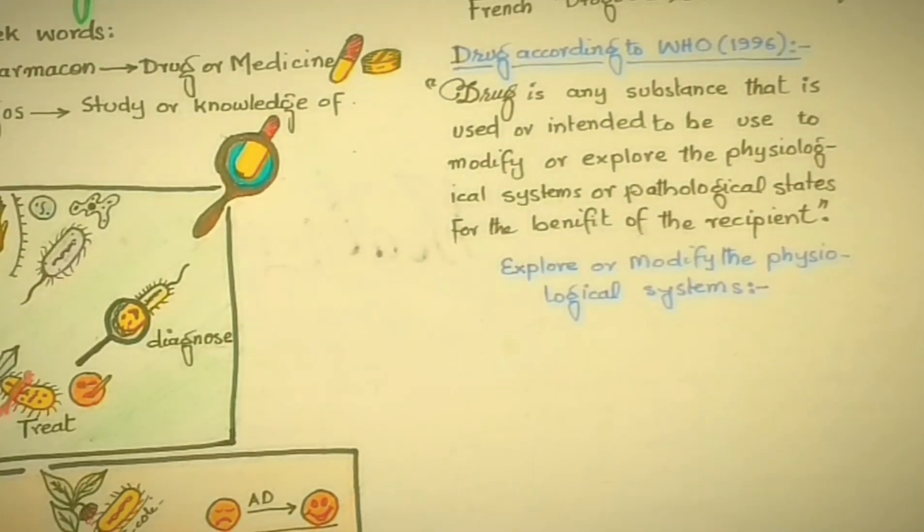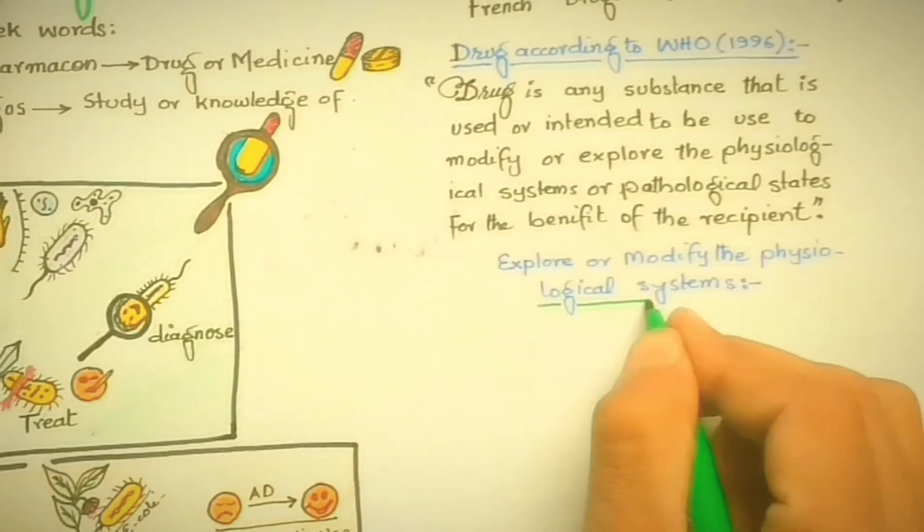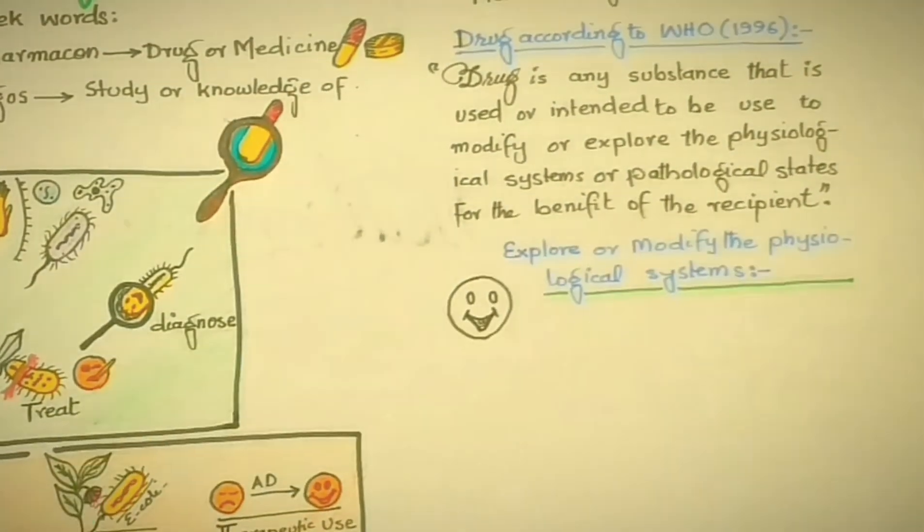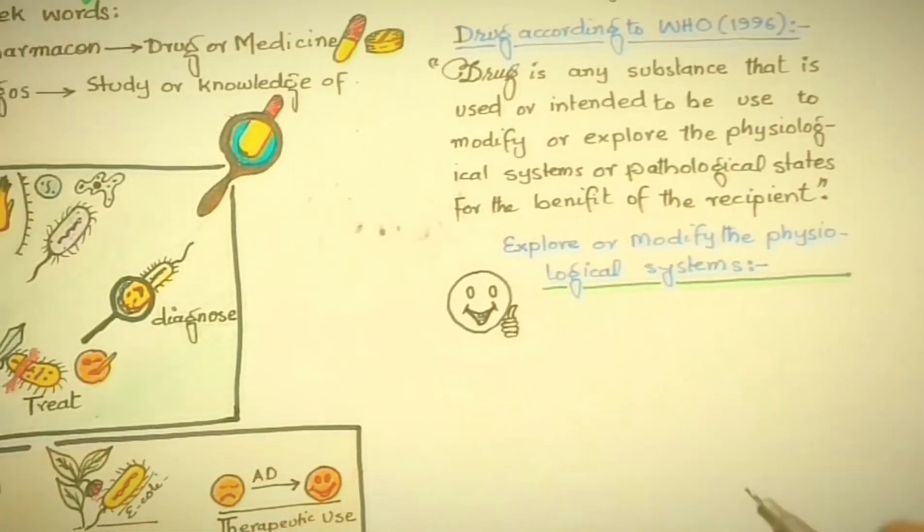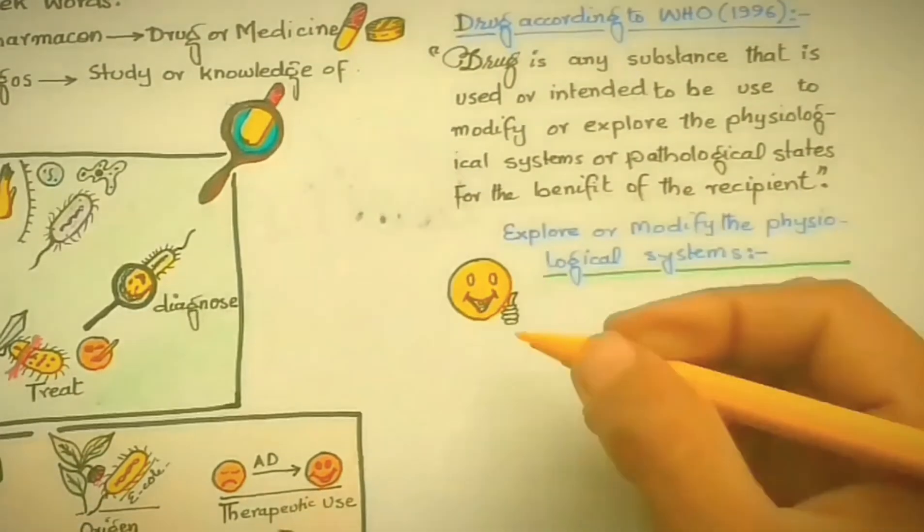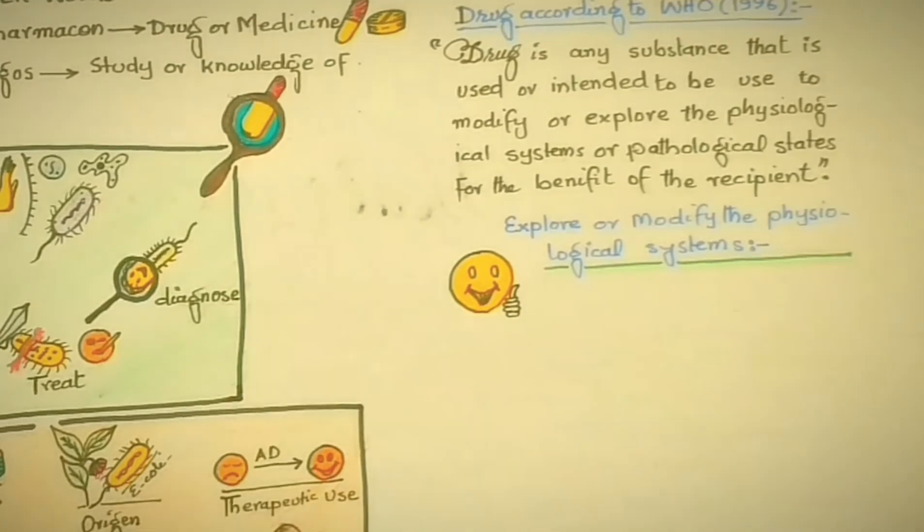According to the definition, drugs can explore or modify the physiological system—the normal functioning of the body. Explore means to investigate or diagnose that the body is working properly or normally.